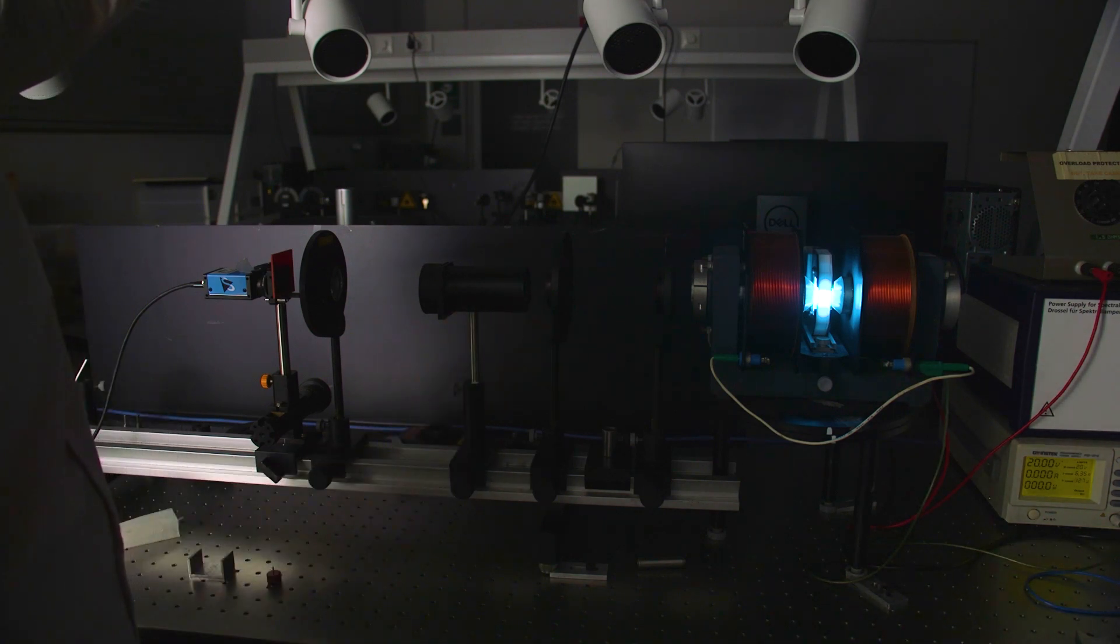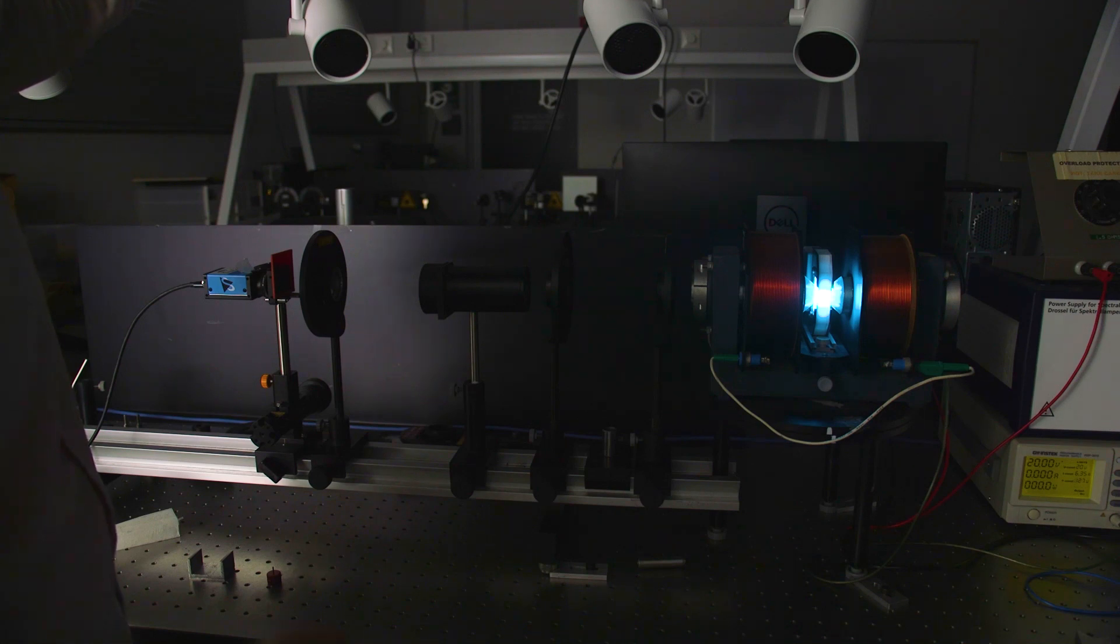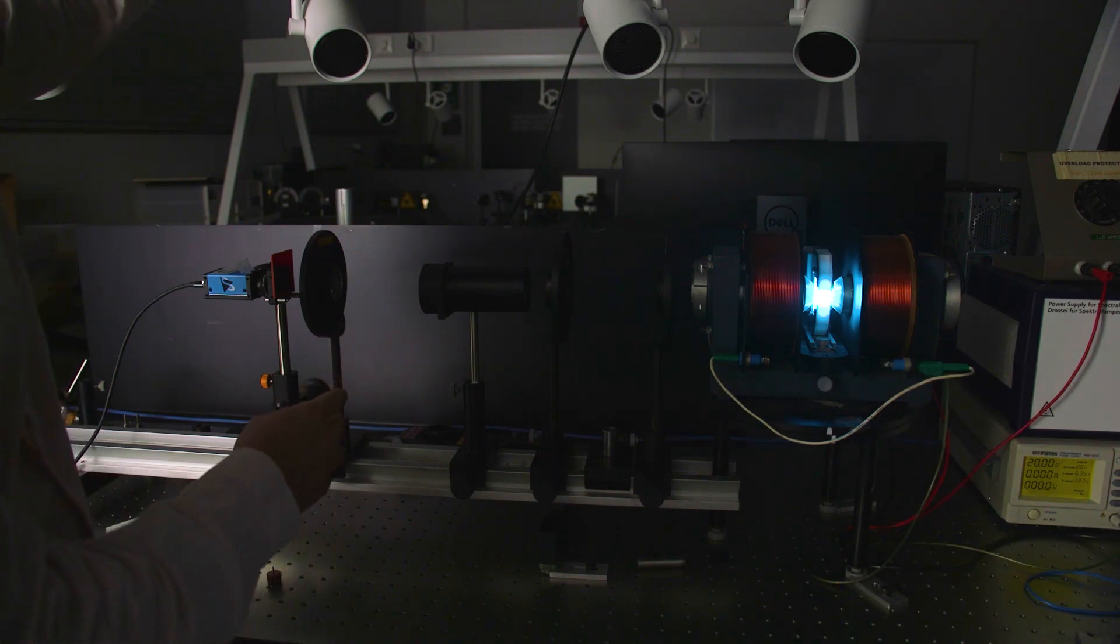Moving along the optical path we have an iris to block out any extraneous light and then a 50 millimeter focal length lens in order to focus the light into the next element Fabry-Perot interferometer.